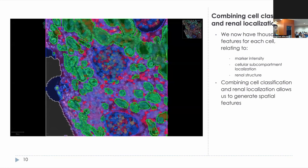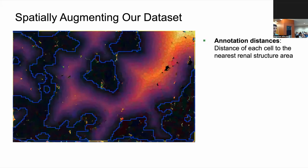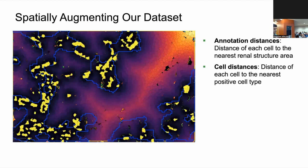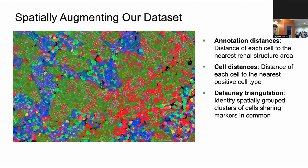We then combine our cell classifications with renal localization, such that we now have hundreds of features relating to marker intensities, cellular sub-compartment localizations, and renal localizations. Combining cell classification with renal localization allows us to generate spatial features — a very hot topic nowadays. These include annotation distances (distance of each cell to the nearest renal structure), cell distances (distance to the nearest positive cell type), and Delaunay triangulation, identifying spatially grouped clusters of cells sharing markers in common. I'll be giving a talk on Friday at 4:45 on spatial biomarkers related to kidney transplant rejection.